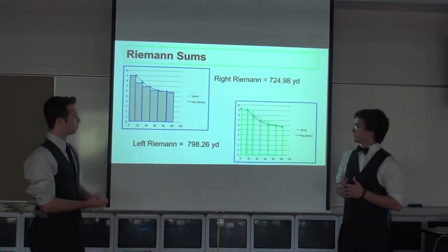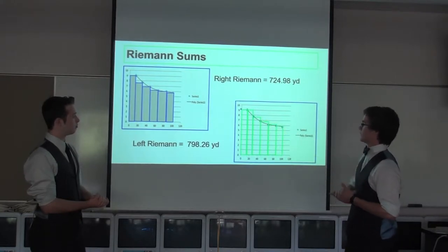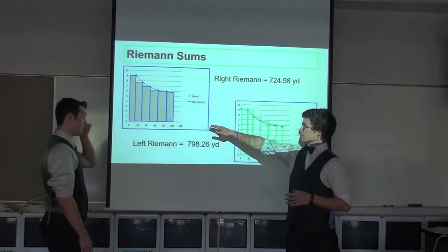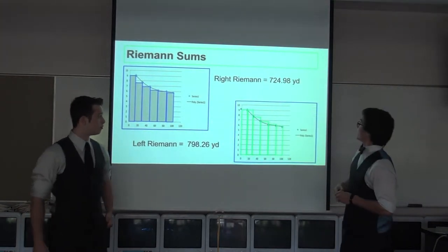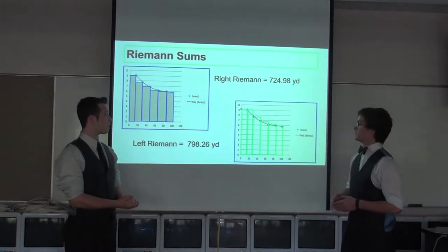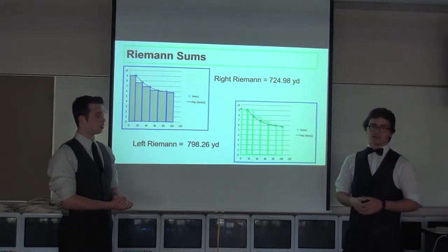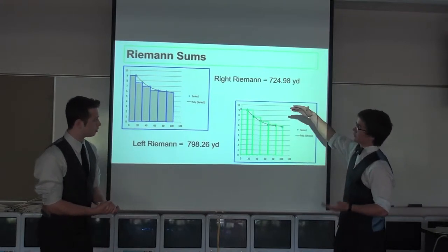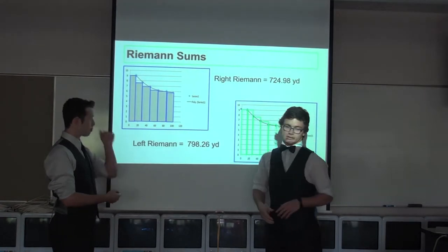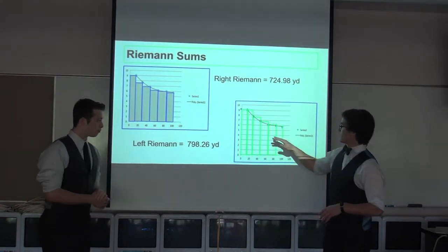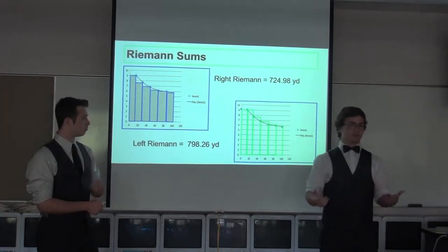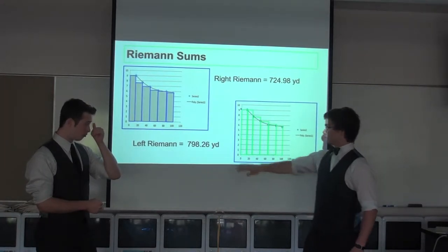Getting into Riemann sums — this is that same graph in both pictures. The right Riemann sum: since I ran 125 yards and did six intervals, I should be at 750 yards. This is an underestimate, considering the graph is decreasing and we're using the right Riemann sum. On the left side, since the graph is still decreasing but we're using left Riemann sums, we have an overestimate, so that's where you get the 798.